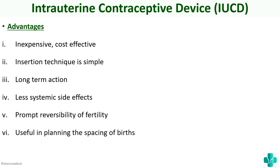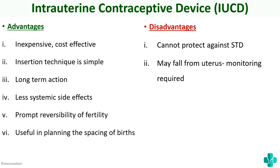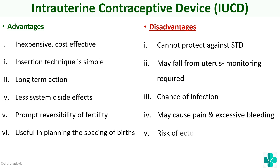It is also useful in planning the spacing of births. Despite these advantages, there are disadvantages. IUCDs cannot protect against sexually transmitted diseases — unlike barrier methods which prevent STDs, IUCDs cannot. They can fall off from the uterus, so monitoring is required; that is the basis for the thread kept outside the uterus. There are chances of infection, it can cause pain and excessive bleeding, and there is an important risk of ectopic pregnancy.